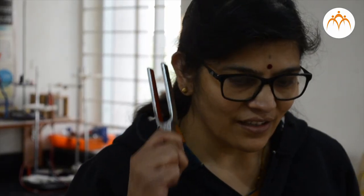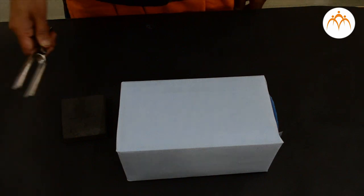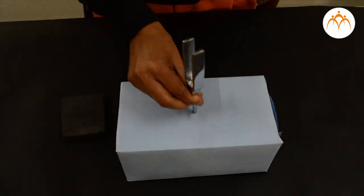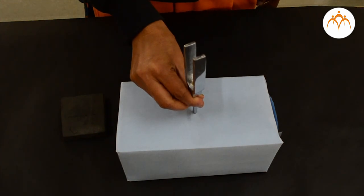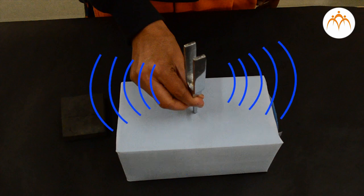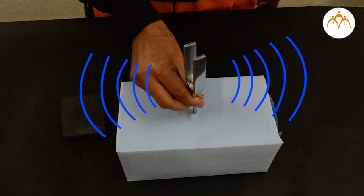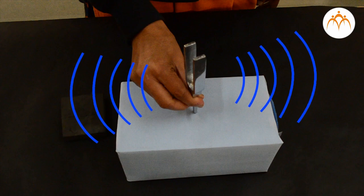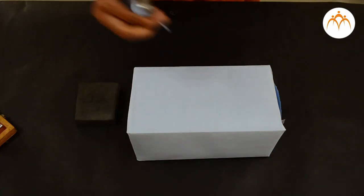Frequency does not increase, but amplitude does. This is an empty cardboard box. If I place the fork on the box, suddenly it becomes audible. Why? Air in the box also vibrates as per the tuning fork. This results in more air vibrating overall and we hear a better sound.